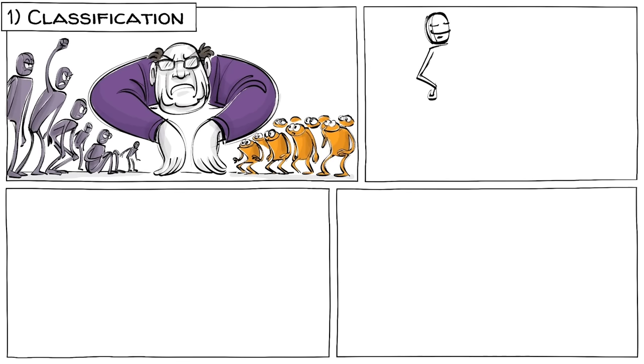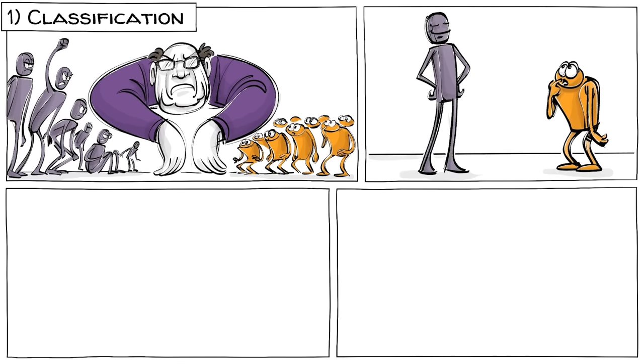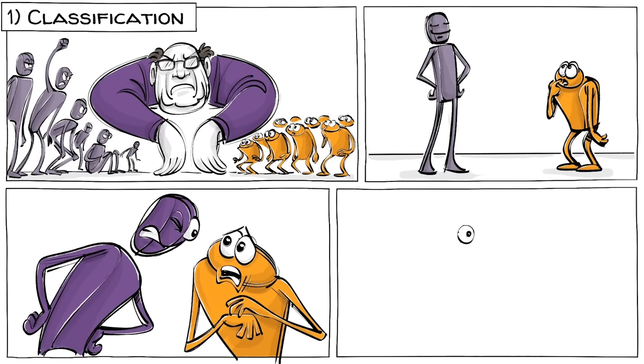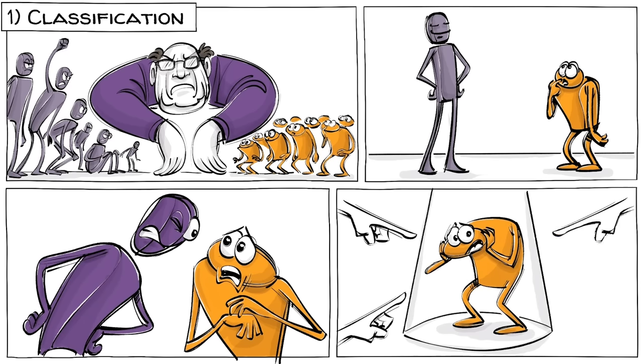Stage 1 is classification. Extremists divide people into separate groups based on their different characteristics. This often happens to create an us-versus-them mentality or to find someone to blame for social problems.